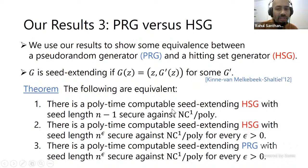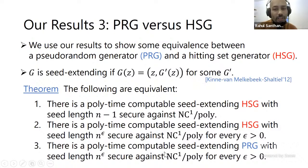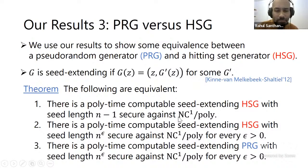We show that a seed-extending hitting set generator with non-trivial seed length implies a hitting set generator with small (epsilon) seed length, and this is equivalent to PRGs. The way we show the theorem: if one holds, we use this to show errorless hardness. Then since errorless hardness implies error-prone hardness, we use error-prone hardness to build a PRG. It goes through the connection between errorless and error-prone hardness — we have no way of doing it directly.